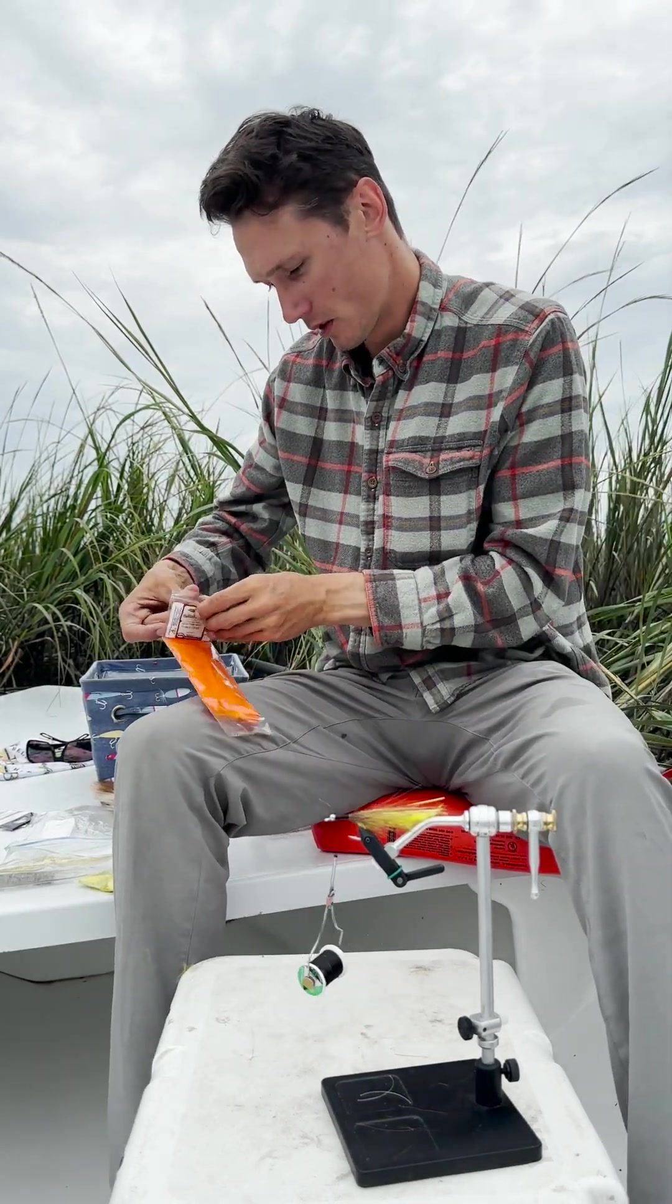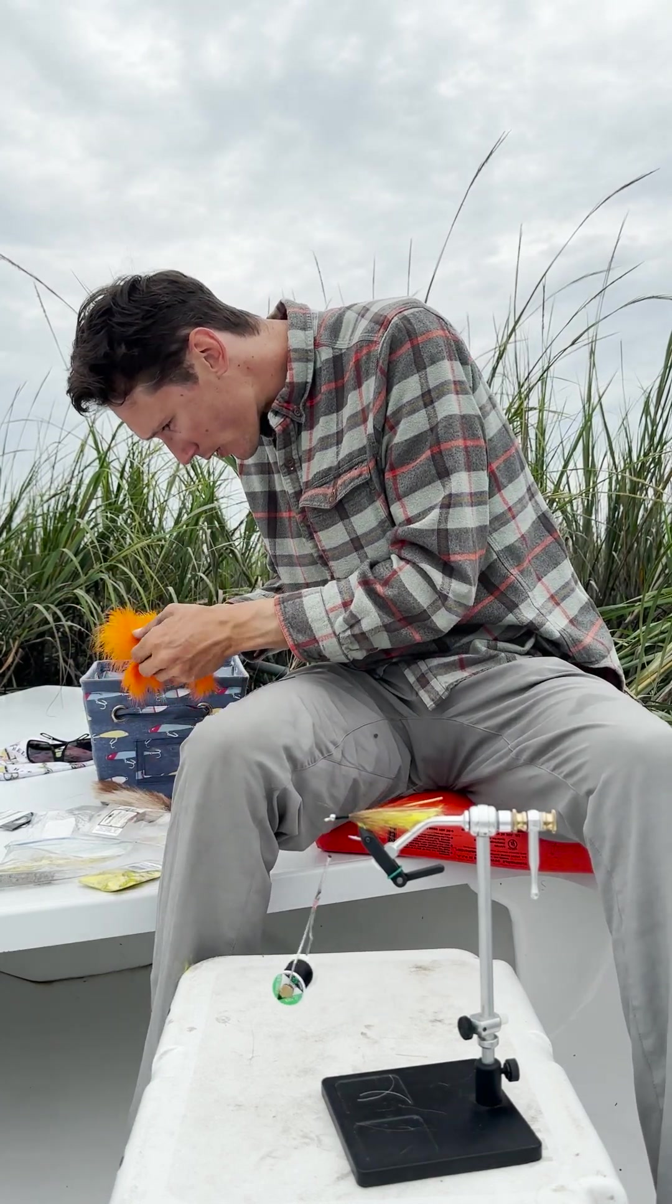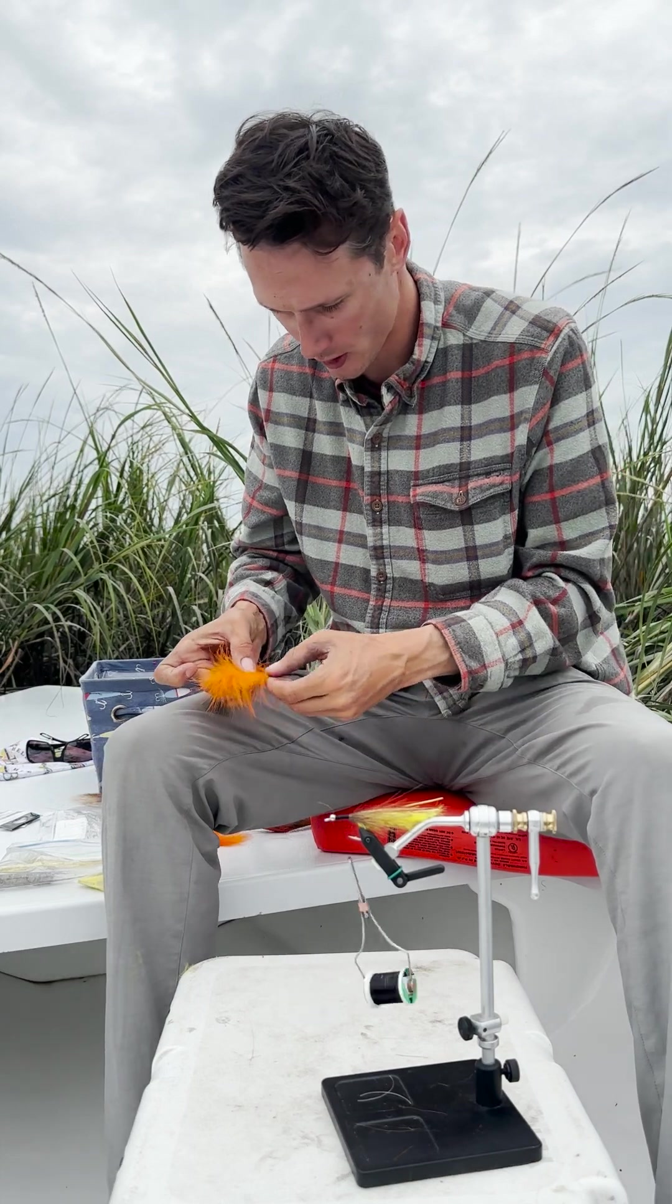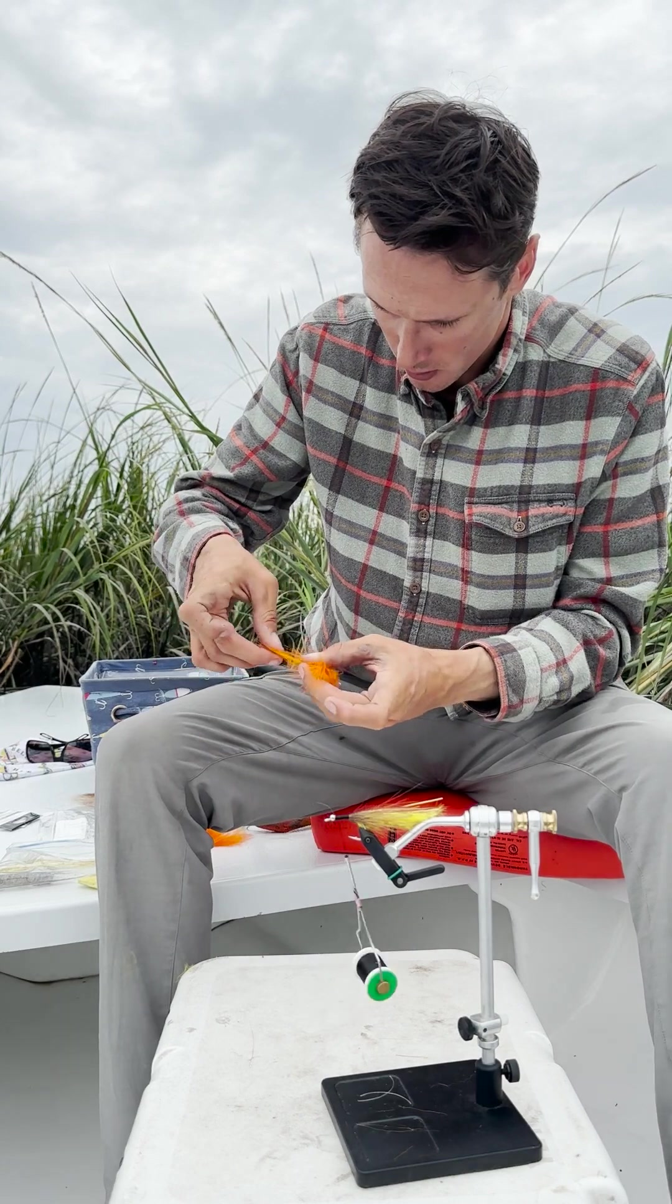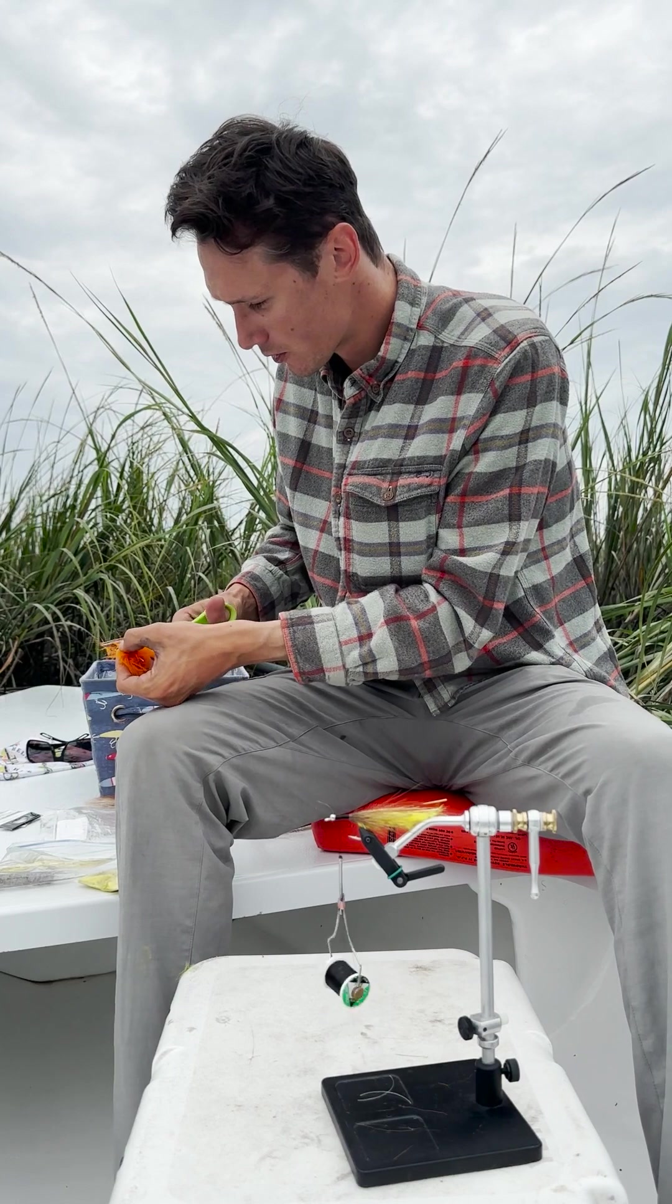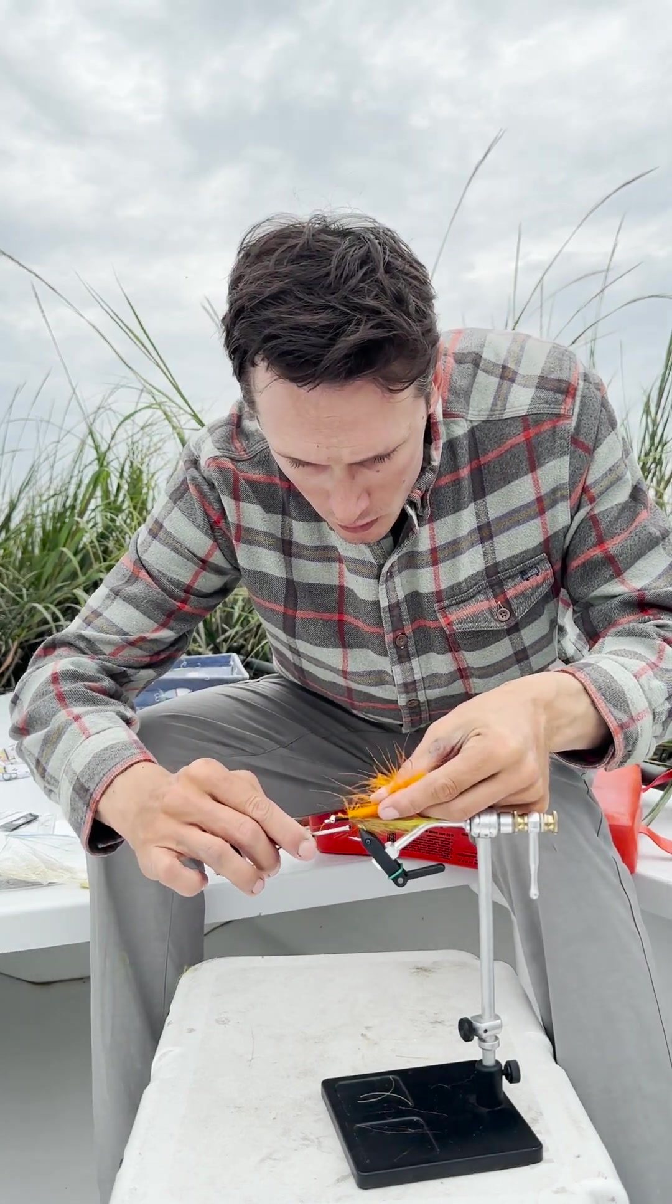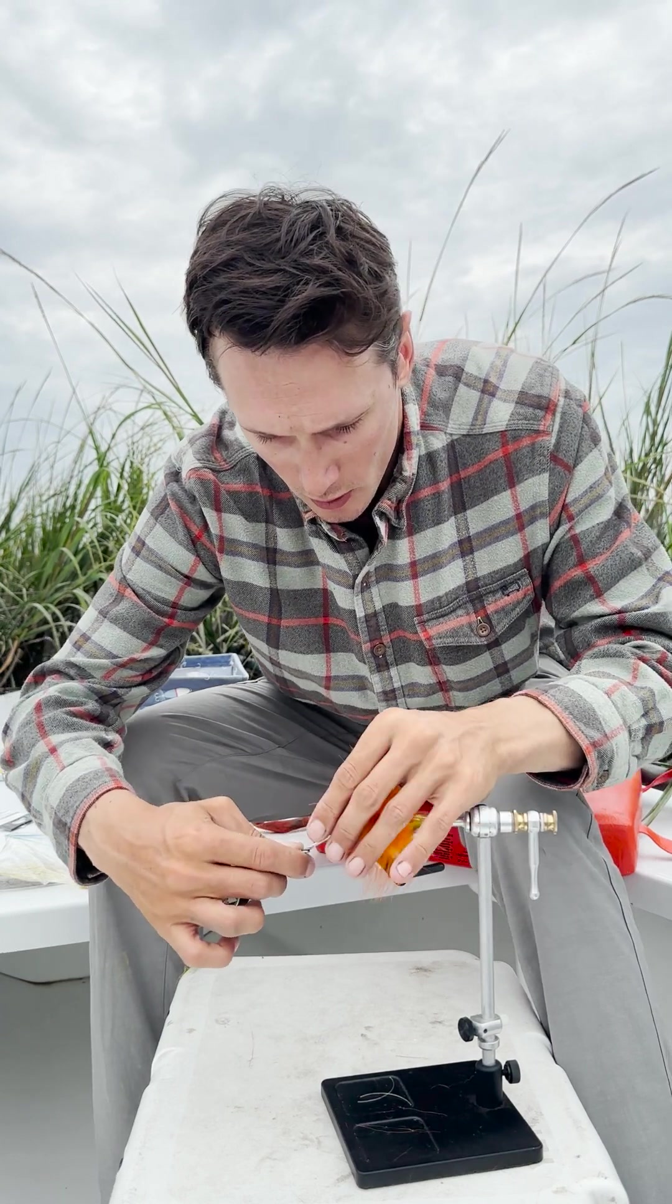Next, get these select marabou plumes in orange, hopefully I've got a decent one left. Trim off say four inches of that, pull the fibers off the back end, pull the fibers to that front end and kind of make yourself a little tie-in spot here. Tie that guy in.